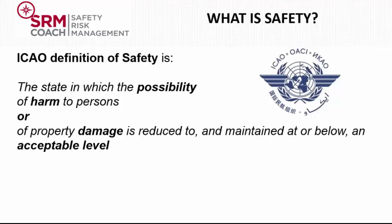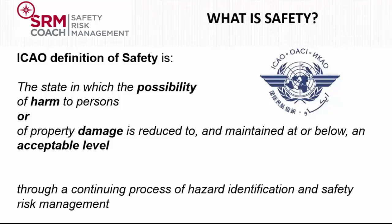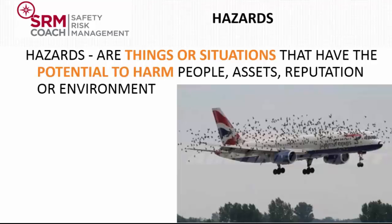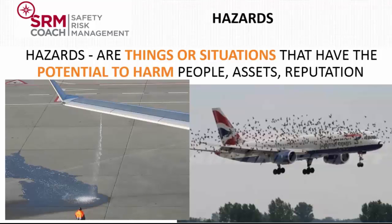The way ICAO says we need to achieve that is through a continuing process of hazard identification and safety risk management. So now we have to define what a hazard is. A hazard is something — for example an object, property, substance, phenomenon, or activity — that can cause adverse effects. For instance, fuel is a hazard if it is not controlled, because it can burn and its fumes can explode. A situation like a fuel leak is a situation which has the potential to cause harm or damage.